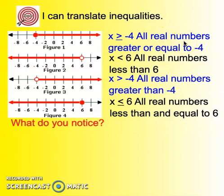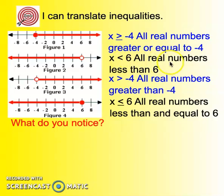The reason why they all start with that is because we're looking for the solutions for this inequality, and this variable stands for all real numbers. Any real number — in this case, all real numbers that are greater than or equal to negative 4. This one is all real numbers that are less than 6, and this one is all real numbers greater than negative 4. And then lastly, all real numbers less than or equal to 6.